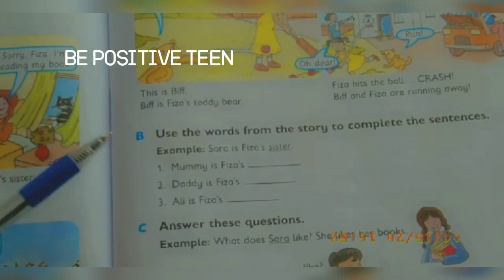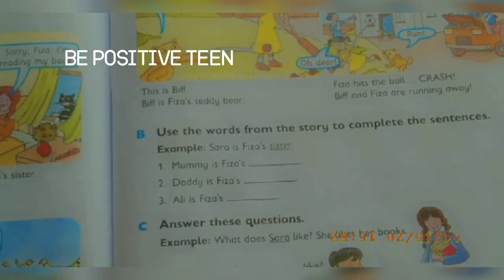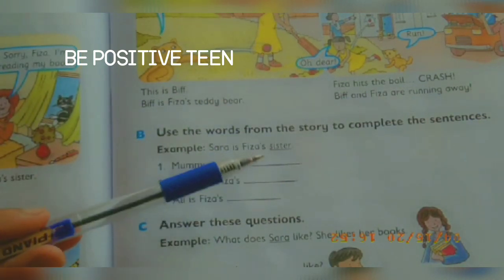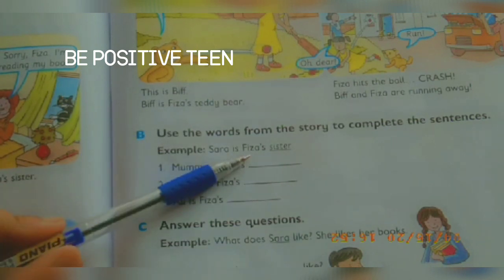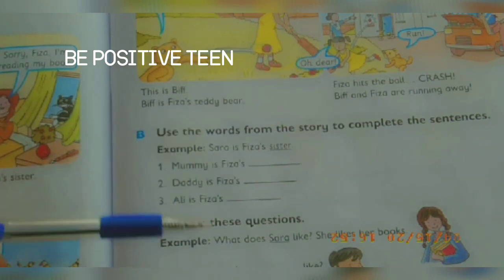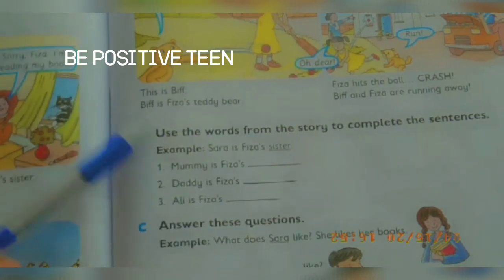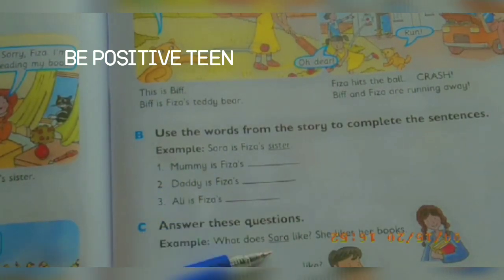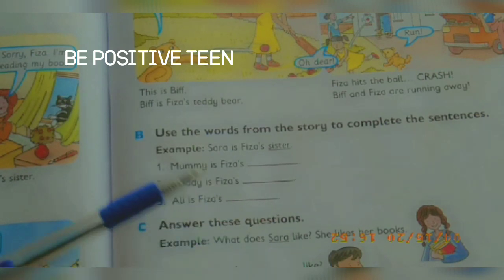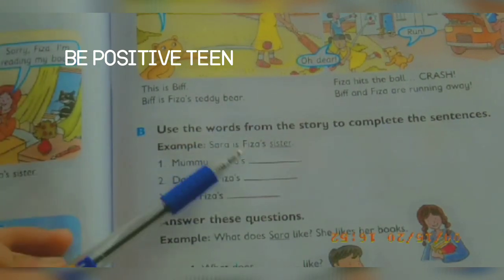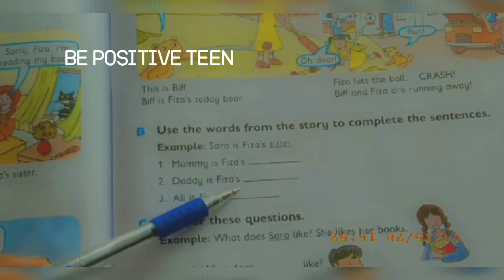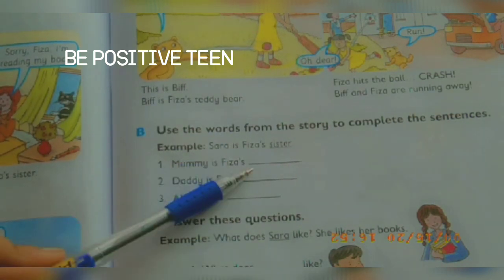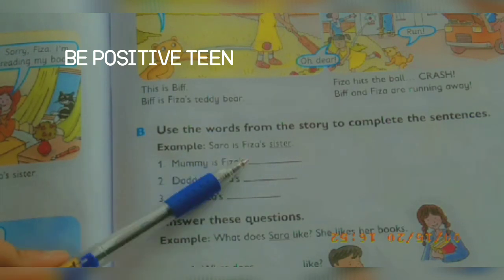Activity number B: Use the words from the story to complete the sentences. Example: Sarah is Fizza's sister. Recall your memory: Mummy is Fizza's — mother, so write 'mother' here. Daddy is Fizza's — father, so write 'father' here.